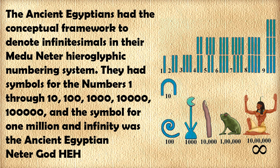The ancient Egyptians had symbols for the numbers 1 through 10, 100, 1,000, 10,000, 100,000, and the symbol for 1 million was the ancient Egyptian Neter God Heh, who also represented infinity.